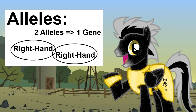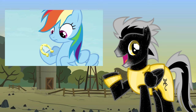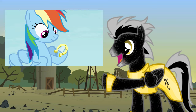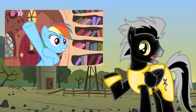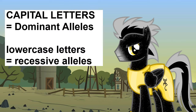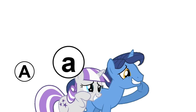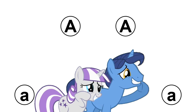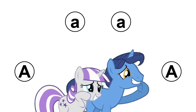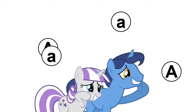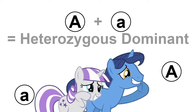For example, if you have two right-handed alleles, then you're right-handed. If you have two left-handed alleles, then you're left-handed. If you have one right-handed allele and one left-handed allele, then you're right-handed, because right-handed alleles are dominant and left-handed alleles are recessive. Remember those two terms — dominant and recessive — because they're going to come up a lot. If you have two of the same dominant alleles, that's called homozygous dominant. Two of the same recessive alleles means homozygous recessive. One dominant and one recessive allele means heterozygous.